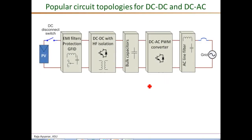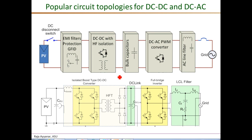Let me indicate some of the popular circuit topologies for the two stages of a string inverter. What is shown here is the complete block diagram from the previous slide, and a possible circuit schematic corresponding to this block diagram. Right across the PV we have some capacitance CPV, which is designed such that the high-frequency ripple in this voltage is low enough to guarantee maximum power point tracking even in a high-frequency sense. A popular topology for the DC-DC stage, especially when high-frequency isolation is needed, is the isolated boost DC-DC converter.